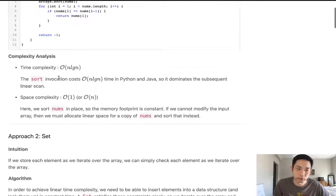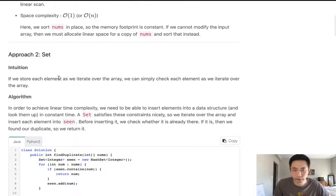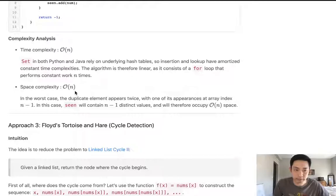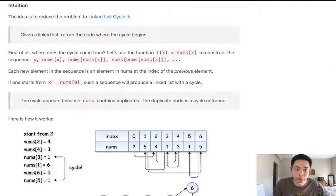You can see that there's like a couple of approaches. First, you could sort it, but we know we can't do that. Set, using some sort of hash, we also know we can't do that because of the space complexity. So this Floyd's tortoise and hare solution.